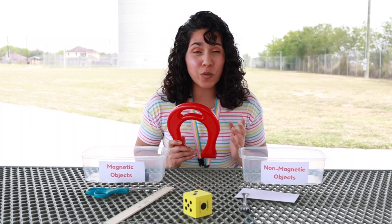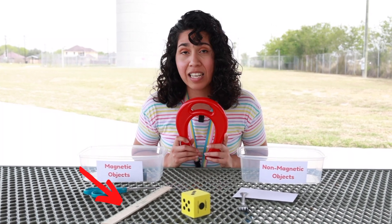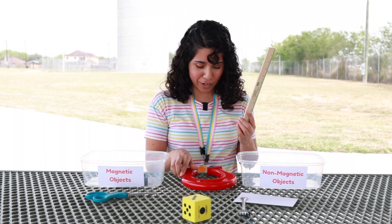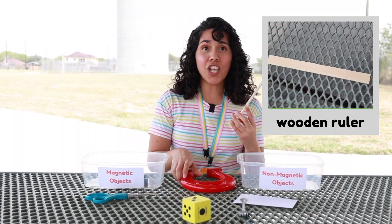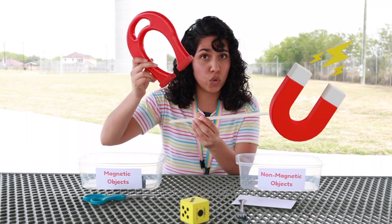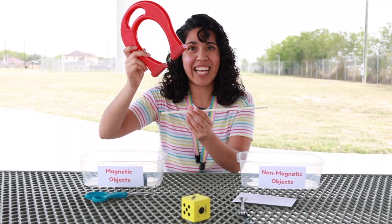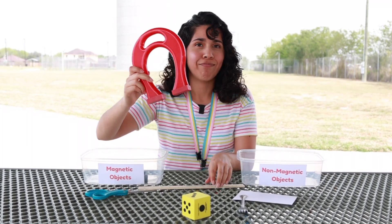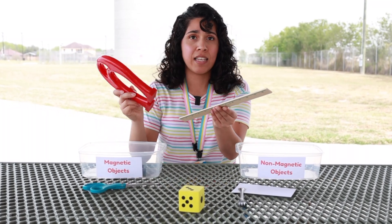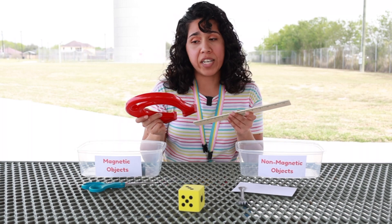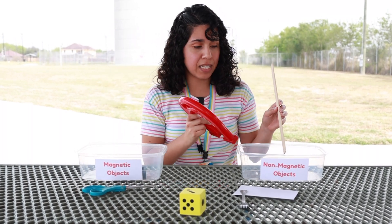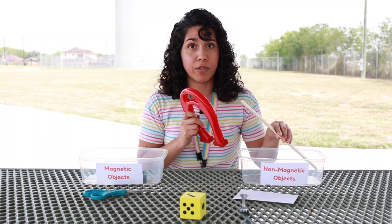What do you think we should grab next? The wooden ruler? Yes? Let me take a picture of it. Do you think that the magnet is attracted to the wooden ruler? Let's check it out. Not a magnetic object. Since it's made out of wood and the magnet is not attracted to it, we're going to place it in the non-magnetic object bin.